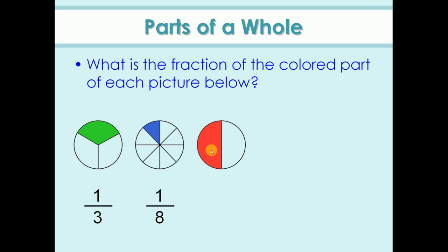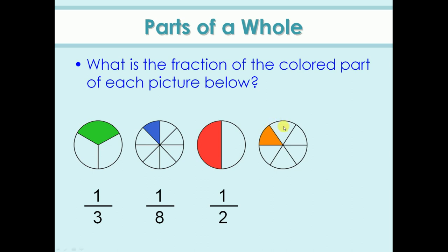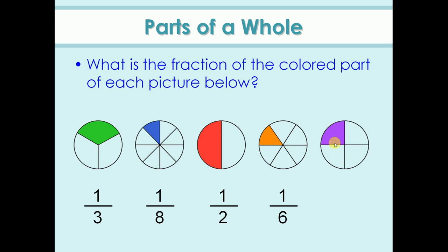Here, total parts are two and the colored part is one, so the fraction is one by two. In the next picture, there are six parts and one part is colored, so the fraction is one by six. In another picture, total parts are four and the colored part is one, so the fraction is one by four.